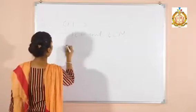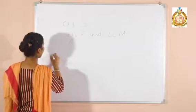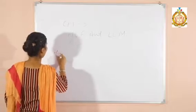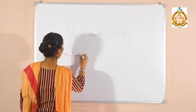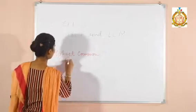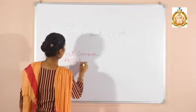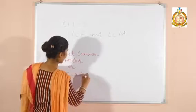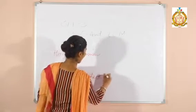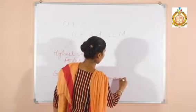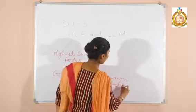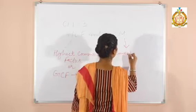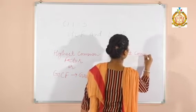The full form of HCF is Highest Common Factor, and its second name is GCF, which means Greatest Common Factor. The full form of LCM is Lowest Common Multiple.